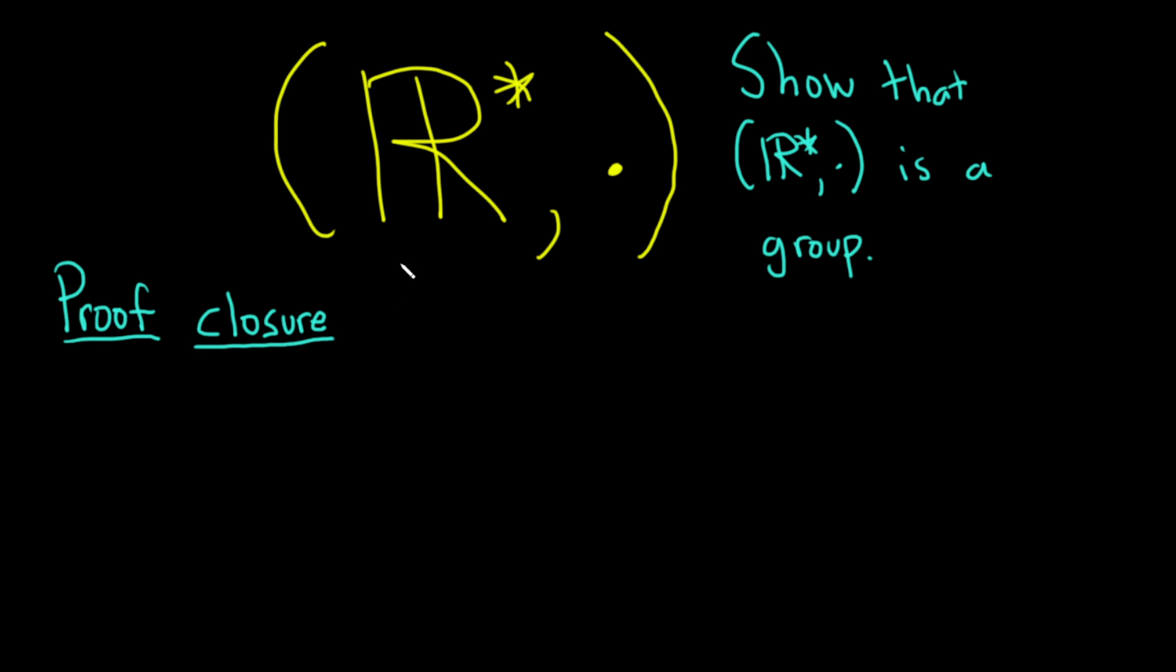So what does closure mean? When we have a set, in this case the set of non-zero real numbers, and we have an operation on that set, we want to see if the set is closed under that operation. What that basically means is: is this operation a binary operation on the set? In other words, given two elements in this set, when we multiply them, are we also going to get an element in that set? So take, let's just show it. The answer is yes.